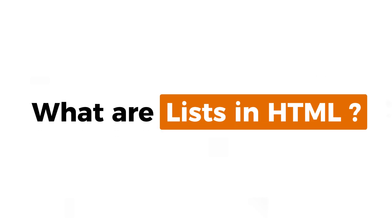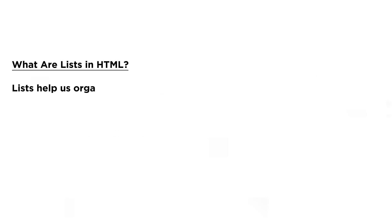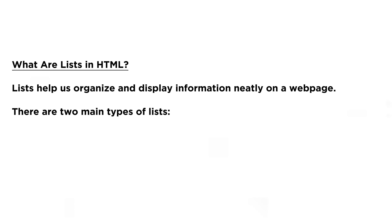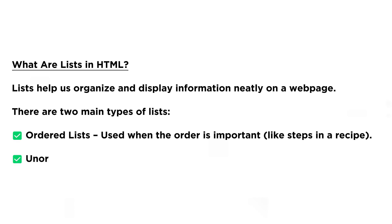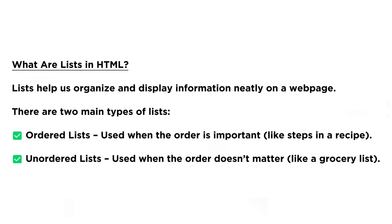What are lists in HTML? Lists help us organize and display information neatly on a webpage. There are two main types of lists. First, ordered lists — used when the order is important, like steps in a recipe. Second, unordered lists — used when the order doesn't matter, like a grocery list.